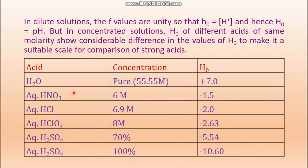Some examples: pure water has molarity 1000/18 = 55.55 mol/L, and both pH and H₀ equal +7. For a 6 molar aqueous solution of nitric acid, the calculated pH is −log(6) = −0.77, but the H₀ value is −1.5 — substantially more negative. For 6.9 molar hydrochloric acid, −log(6.9) = −0.84, but H₀ equals −2.0.